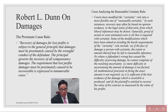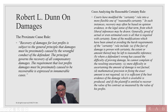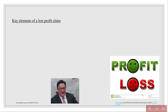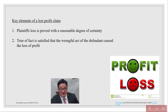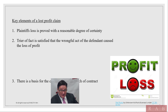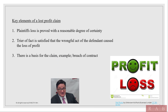It's important to understand not only how to do it and the formula, but also the proximate cause rule and the reasonable certainty rule. Now let's talk about key elements of a lost profits claim. One: the plaintiff's loss is proved with a reasonable degree of certainty. Two: the trier of fact must be satisfied — because even if everyone thinks the loss is proven, if the judge or jury does not, you're not going to win. And three: there has to be some basis for the claim.